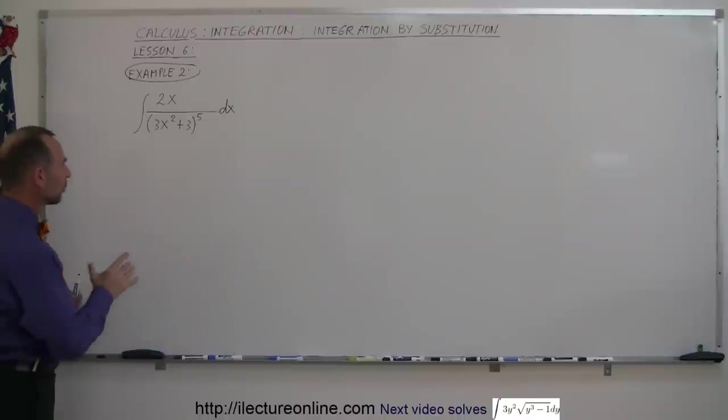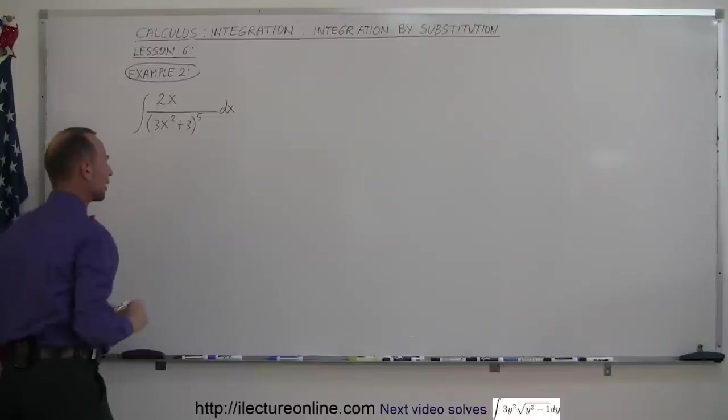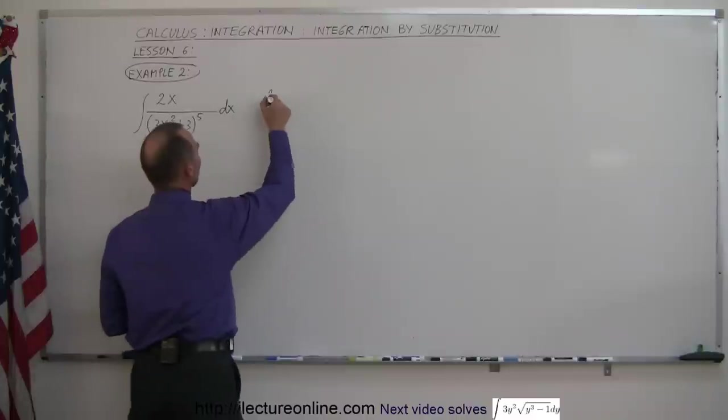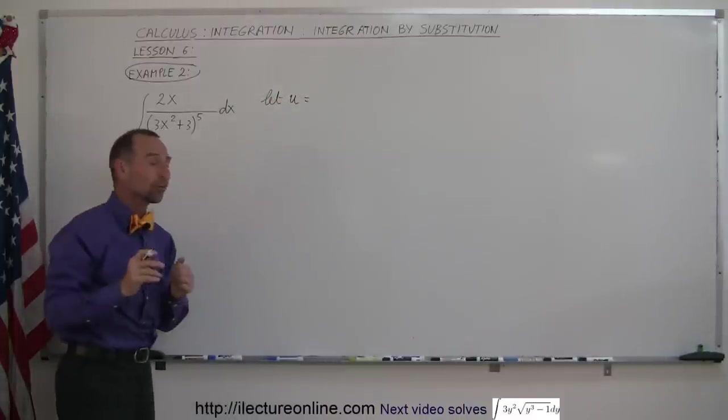Right away you realize here that we don't have the proper differential. So we're going to take what's inside the parentheses and substitute that for the variable u. So let u equal what's inside the parentheses. That's usually a good rule of thumb to do that.